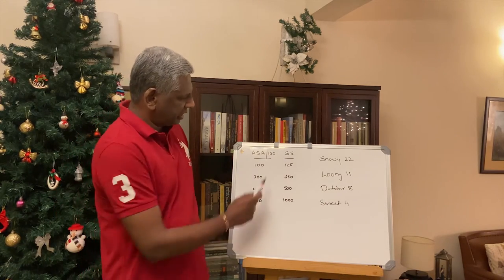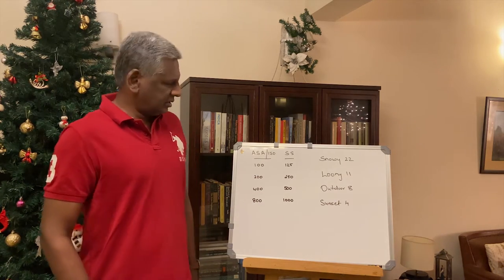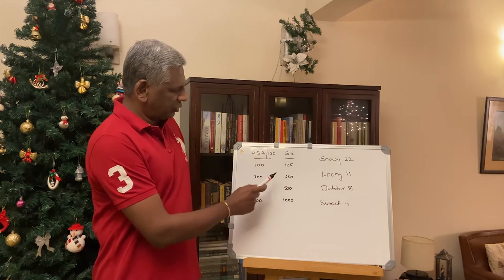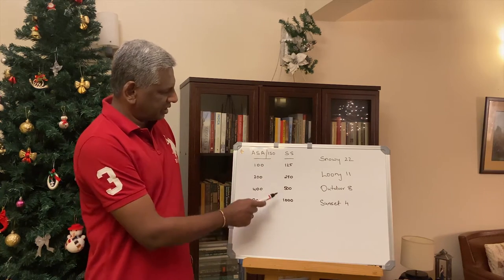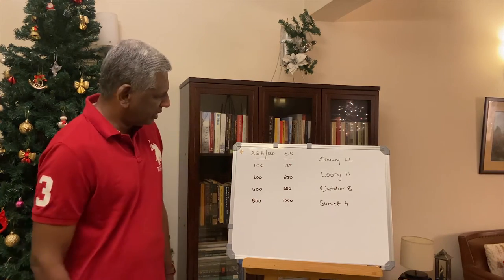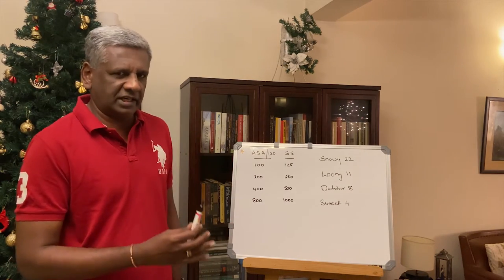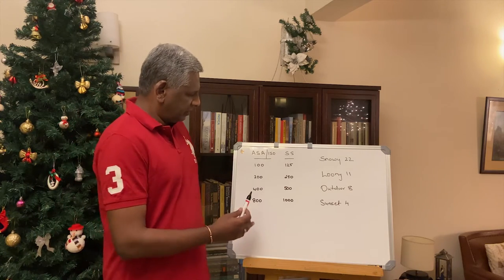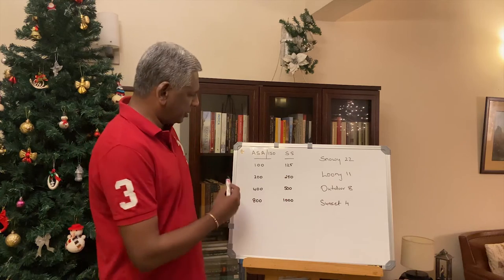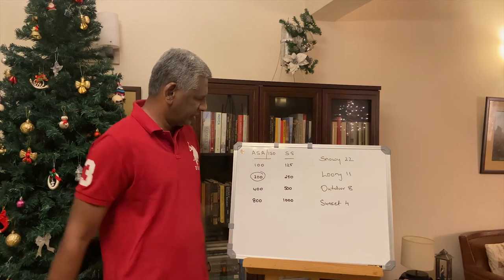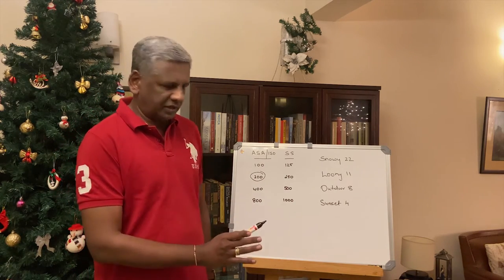What we first do is choose a film with an ASA or ISO level, and that remains fixed for as long as that film is loaded in a camera. So suppose we take a film with 200 ASA — that is going to be fixed for the duration of the roll.